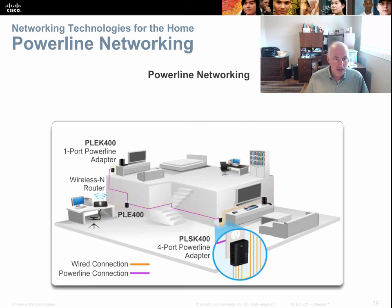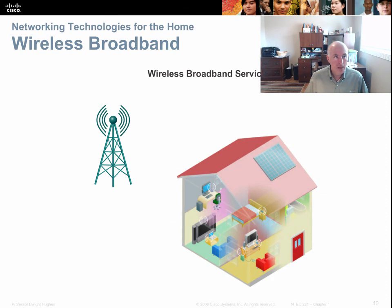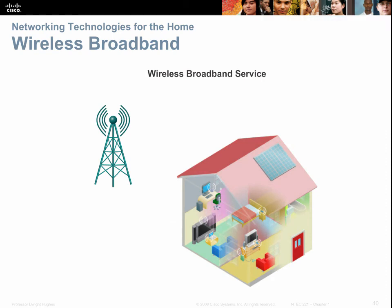One innovative way to get internet to homes is through power lines — you can actually deliver internet connections across a power line using a power line router that you plug into any outlet in your home. This is a great way to move internet throughout your house without running network cabling. Wireless broadband — with names like Clear, 3G, or 4G — is the ability to get internet access across the cellular service.